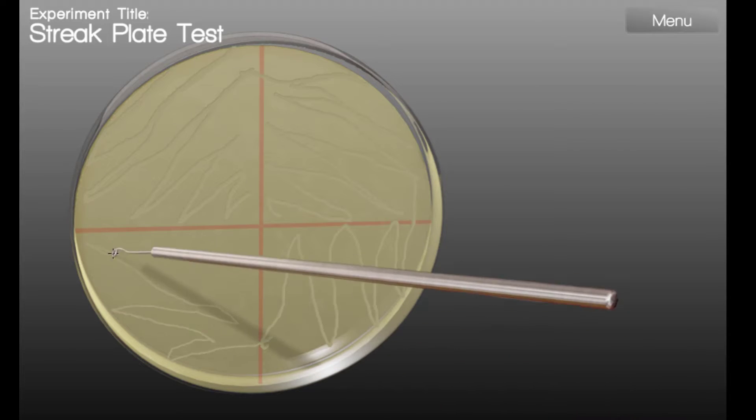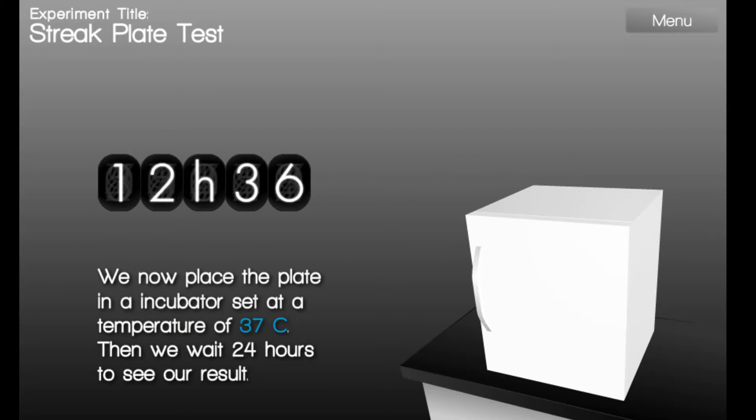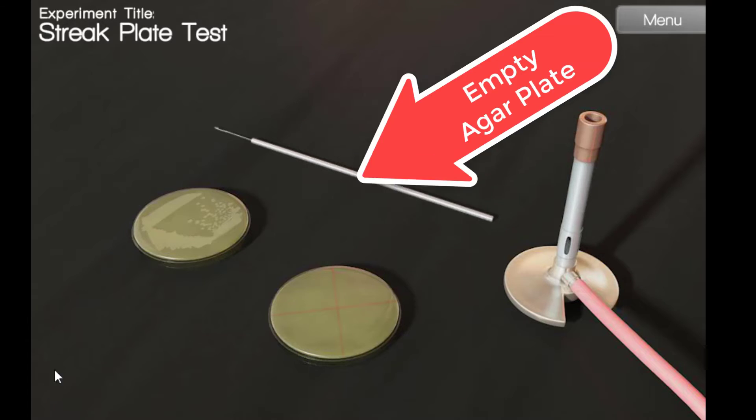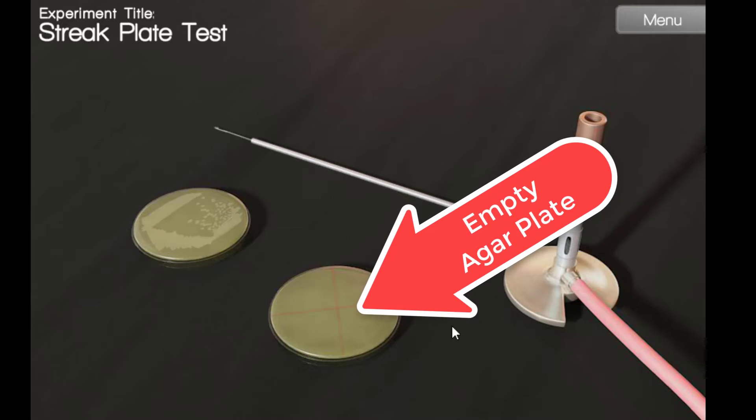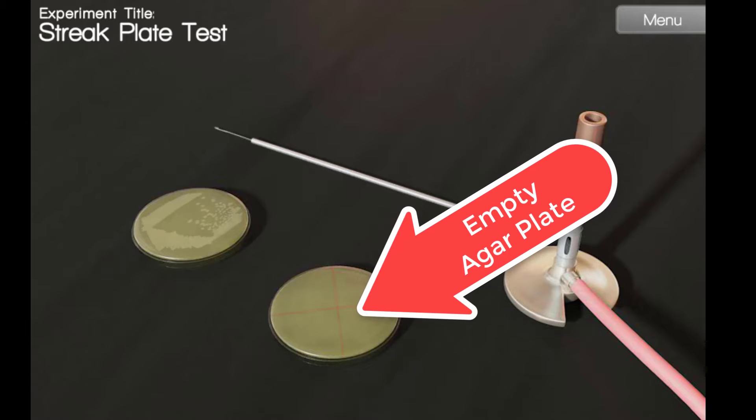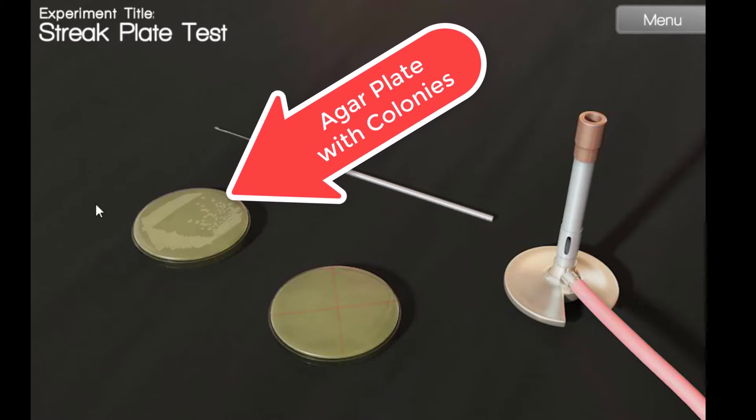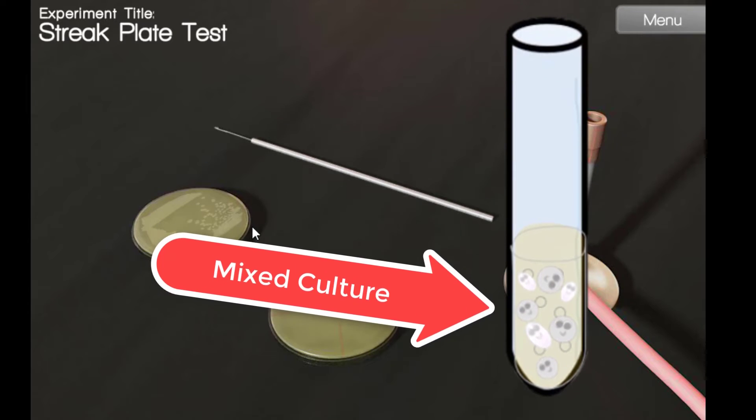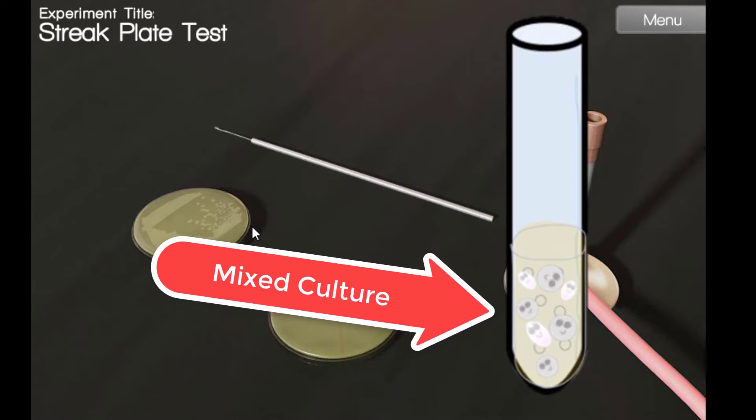Now, you are ready for incubation to allow your colonies to grow. Let's start our procedure. You see here that we have a Bunsen burner, an agar plate with nothing on it that has been marked into quadrants using a permanent marker. We have another agar plate that has colonies. This plate was made using a mixed culture having more than one species of bacteria.